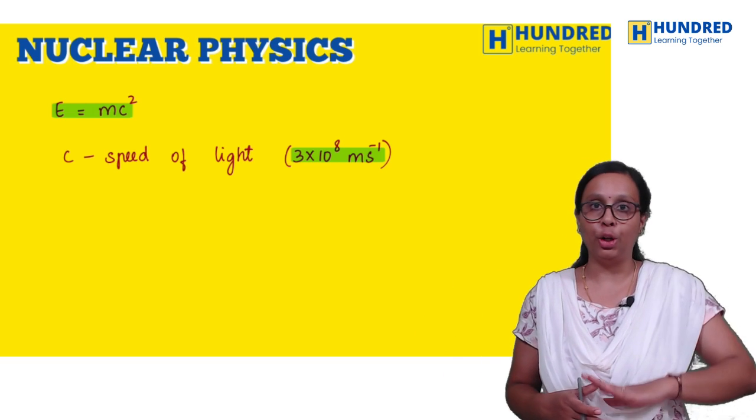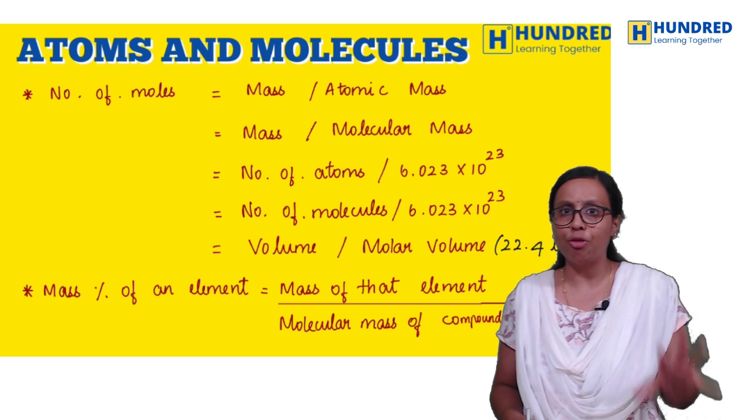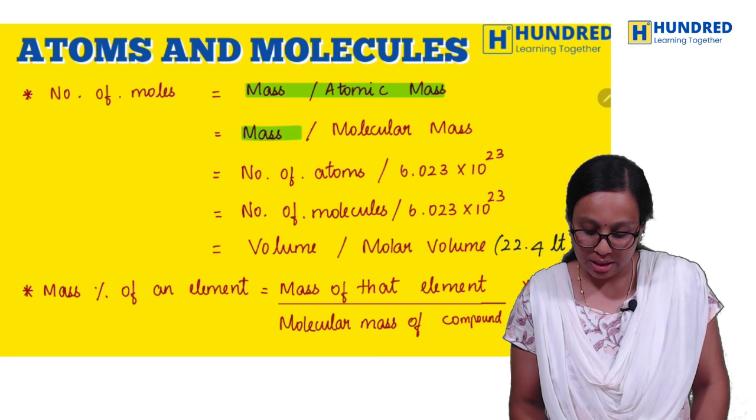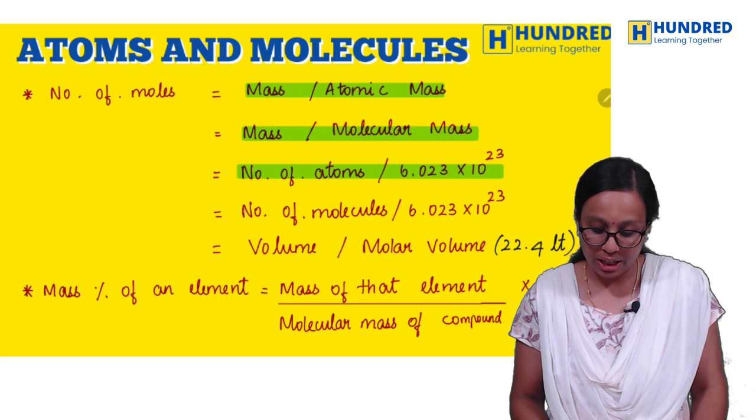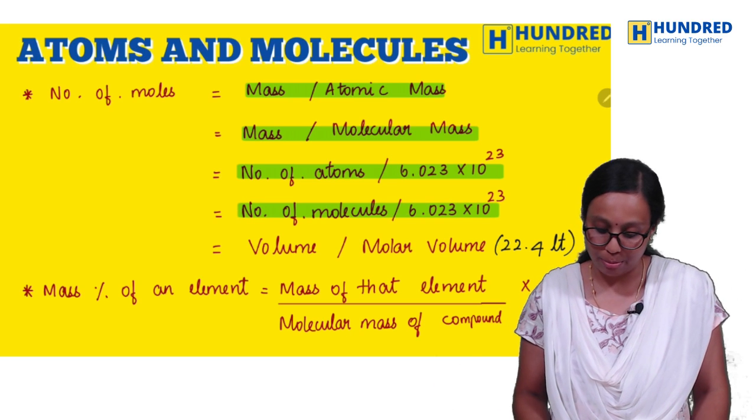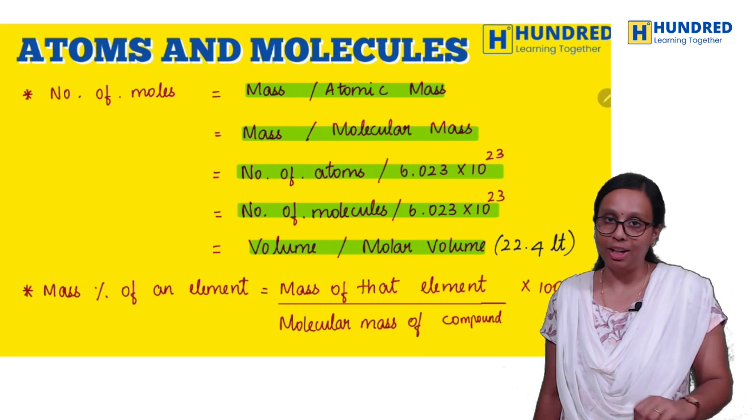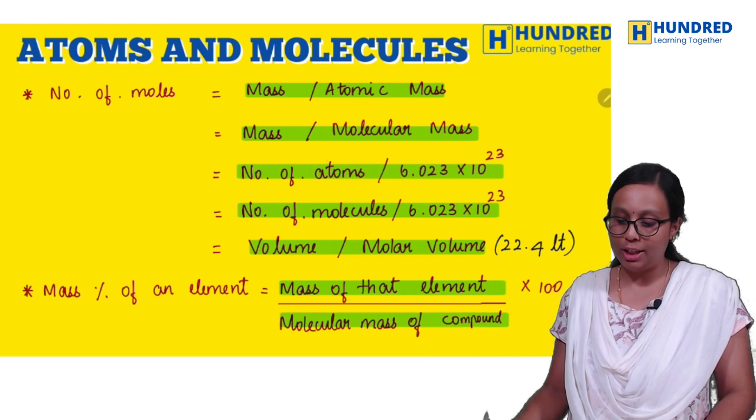Next, chemistry. Number of moles has five formulas: mass by atomic mass, mass by molecular mass, number of atoms by Avogadro's number, number of molecules by Avogadro's number, volume by molar volume.